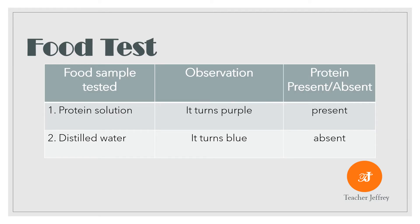Here is our observation and interpretation for food containing protein and food without protein in Biuret reagent. Protein solution turned purple, thus protein is present, while distilled water turns blue, thus protein is absent.